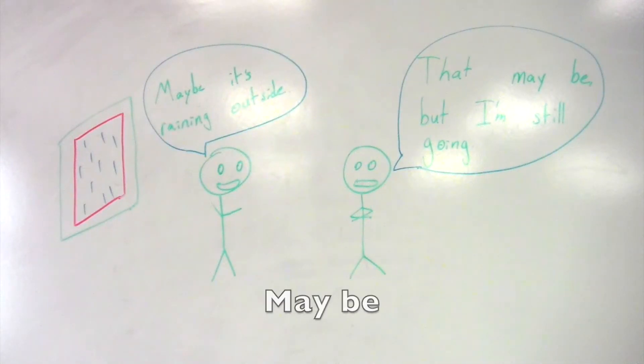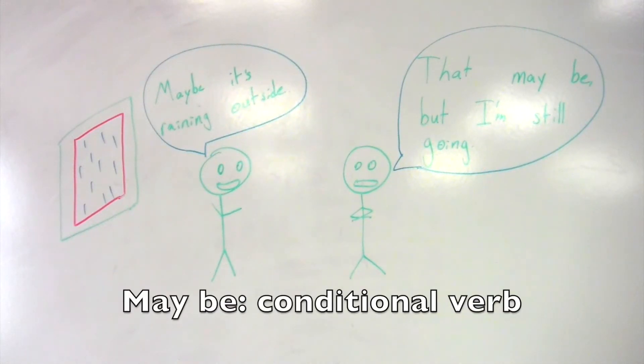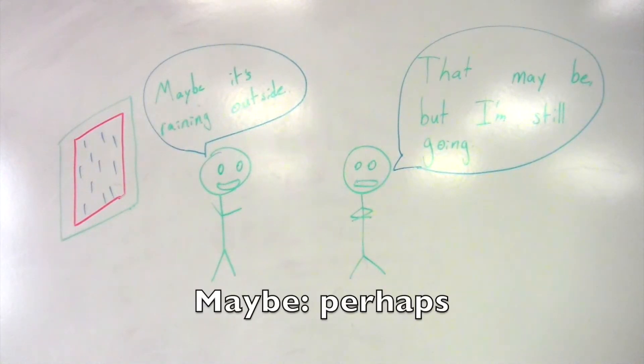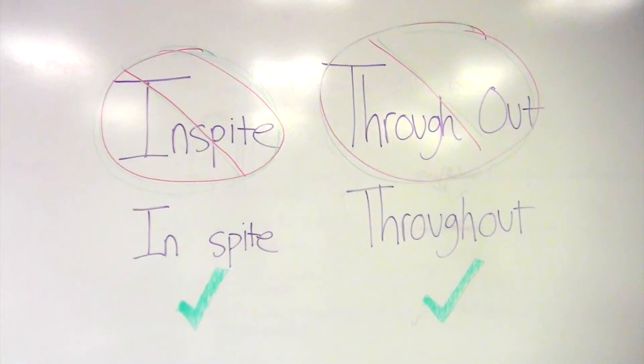Maybe as two words is a conditional verb form, whereas maybe as one word is an adverb meaning perhaps. Both in spite and throughout are often confused. In spite is correctly spelled with two words, and throughout is correctly spelled as one word.